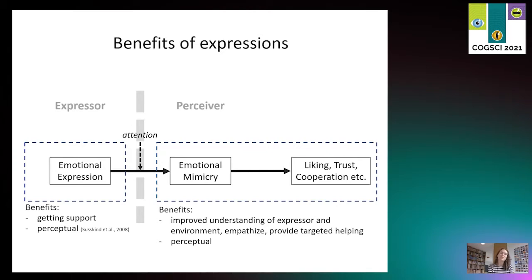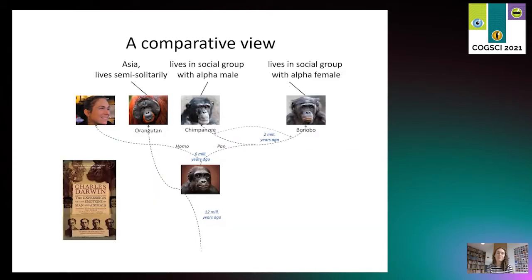In our work, we are comparing different species of great apes—actually we're comparing humans, chimpanzees, bonobos, and orangutans, and the gorilla is still on my list. We are doing that because we hope that by doing so, we can get some evolutionary understanding of where our expressions come from and why they've evolved the way they are.